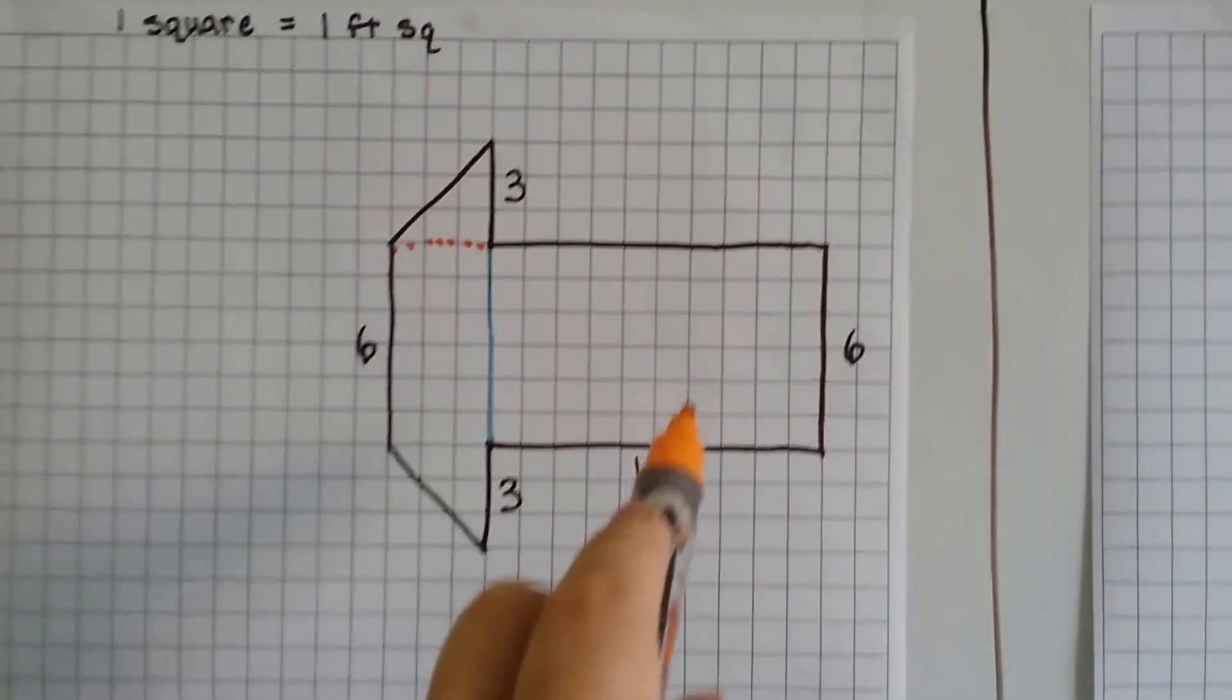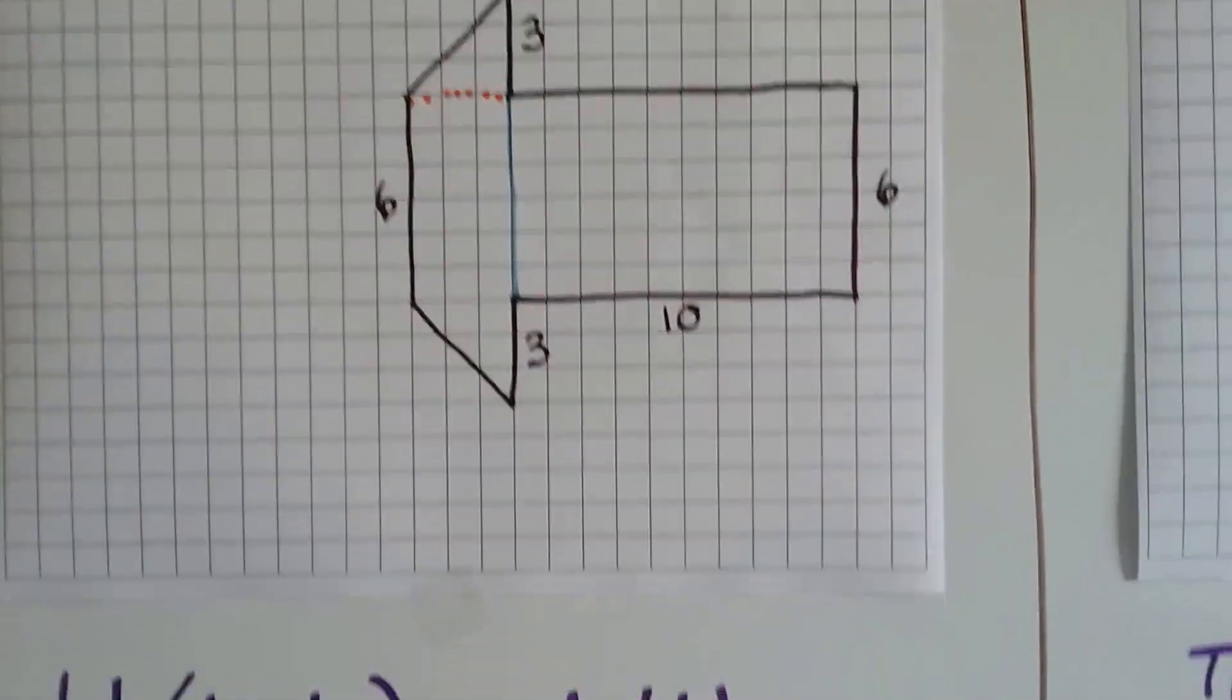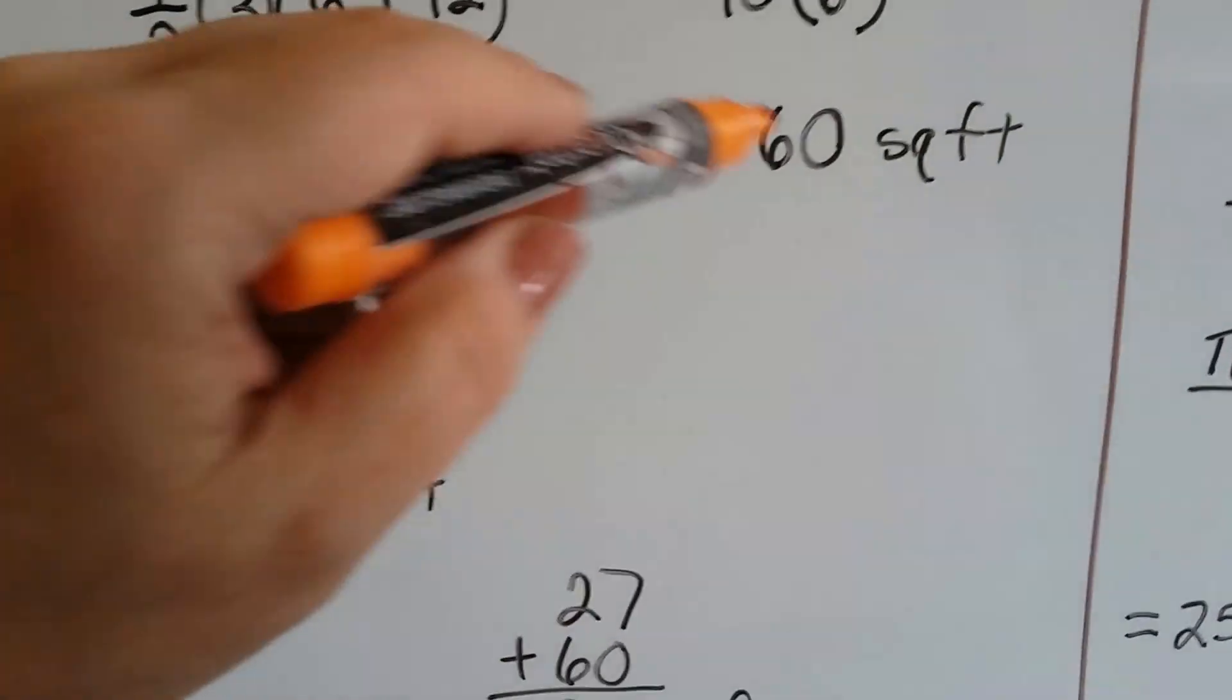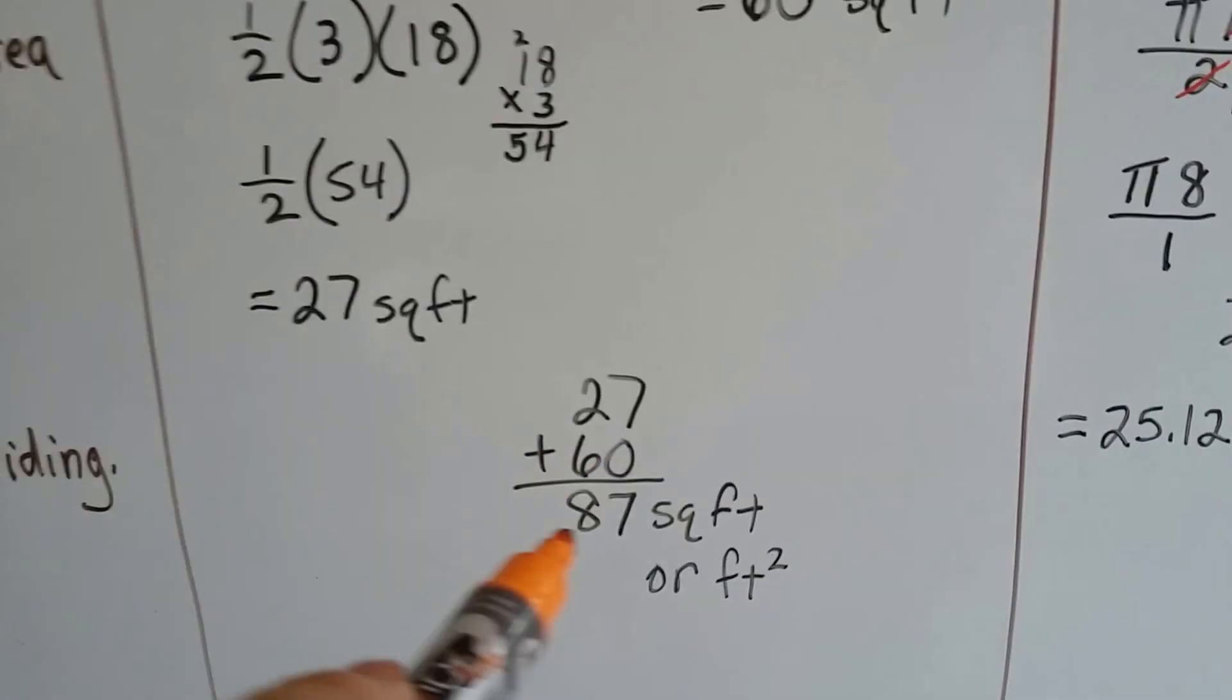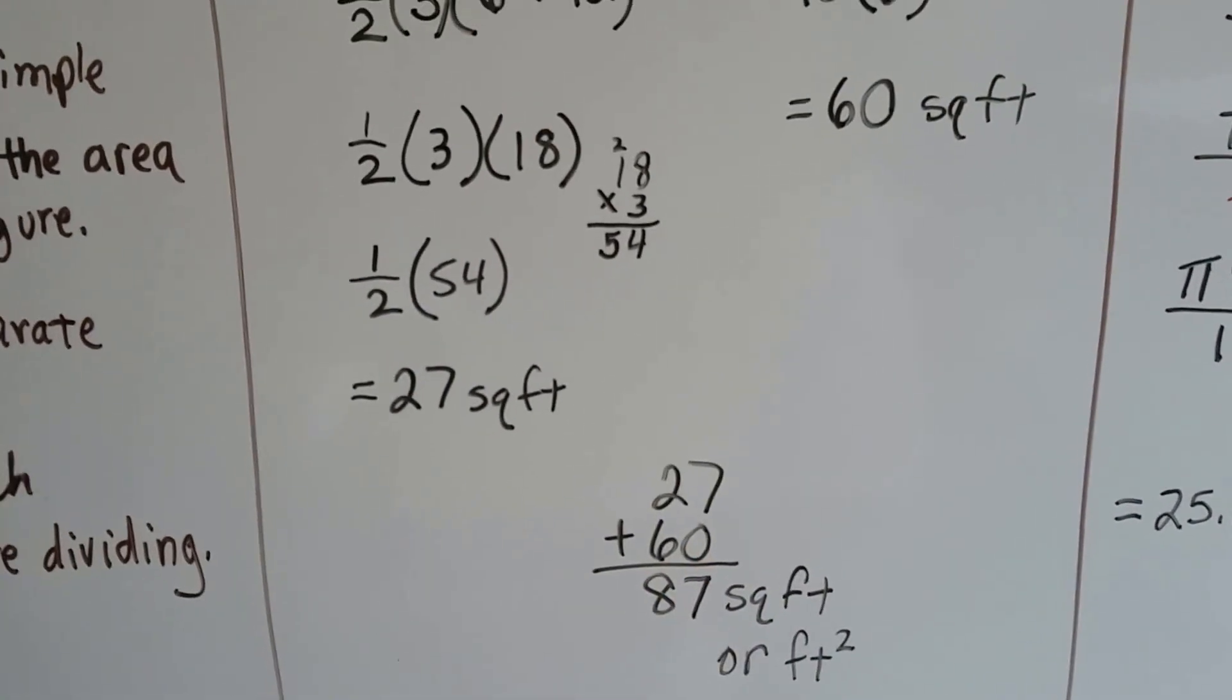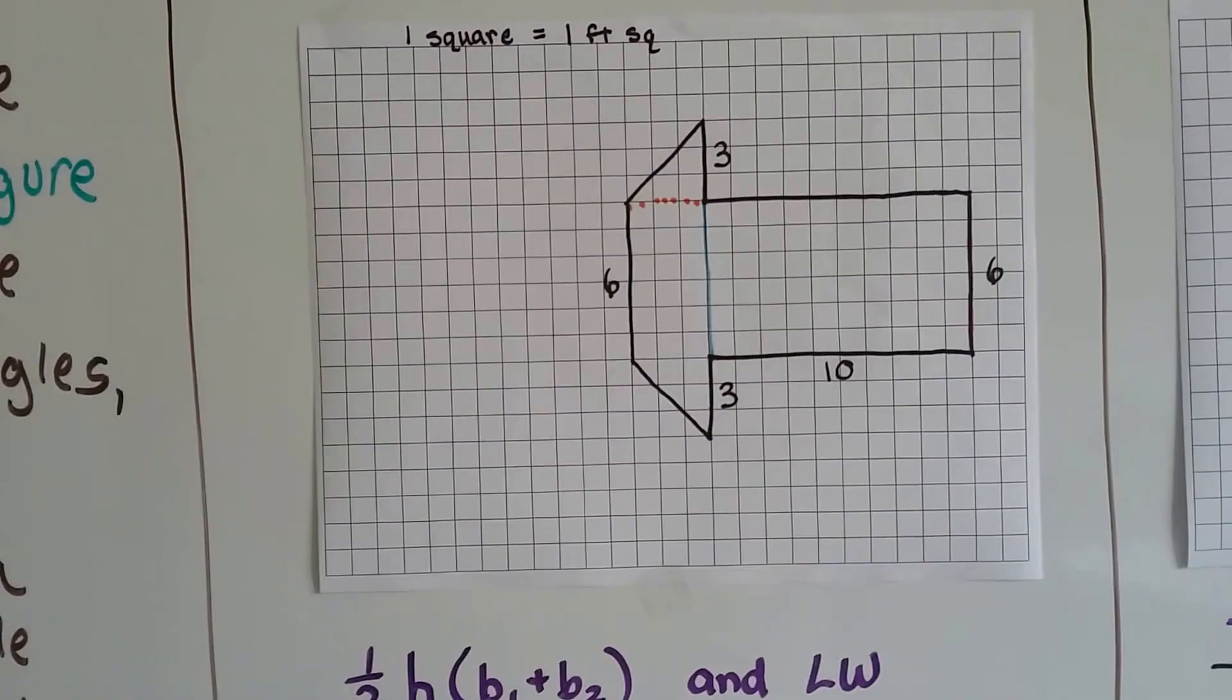Alright, now all we have to do is 10 by 6, this rectangle, and we're done. And we add them together. 10 times 6 is 60. Now, we add the 60 and the 27, and we get 87 square feet, or feet squared. That's the total. 87 square feet. Let's try another one.